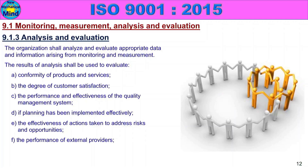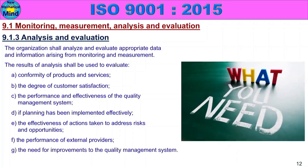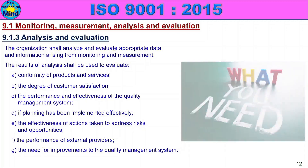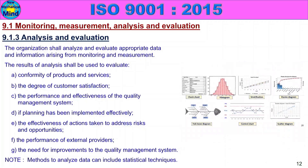Examples of external providers include suppliers, stakeholders, and consultants — their full support and performance. The need for improvements to the quality management system is also evaluated — improve and improve. Note: methods to analyze data can include statistical techniques such as SPC, histogram, and Pareto charts. This concludes 9.1.3 Analysis and Evaluation.